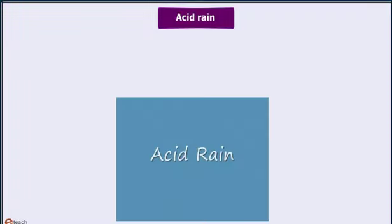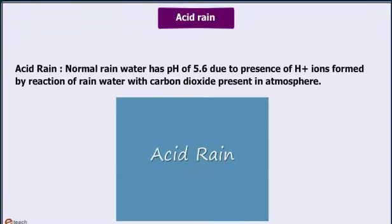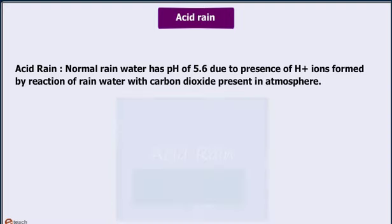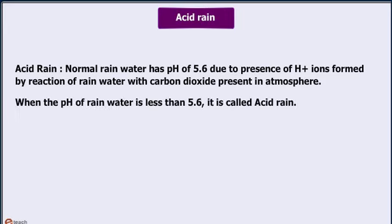What is acid rain? Normally, rainwater has a pH of 5.6 due to the presence of H+ ions formed by the reaction of rainwater with carbon dioxide present in the atmosphere. When the pH of rainwater is less than 5.6, it is called acid rain.